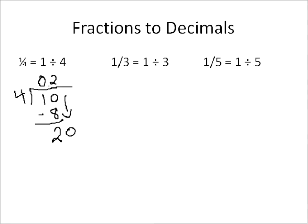10 minus 8 is 2. And we'll put a 0 in there. 4 goes into 20 5 times. 5 times 4 is 20. And so that's our final answer. We have no remainders here. And we have an answer of 0.25.